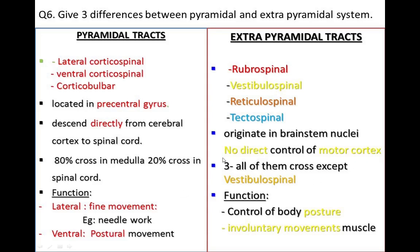The function of pyramidal tracts concerns fine movement — the lateral corticospinal tract for fine skilled movements, and the anterior corticospinal tract for postural movement. The function of extrapyramidal tracts is basically body posture and equilibrium, and to some extent involuntary movements of muscles. We will come back to the differences of these when we have completed discussion of both tracts.